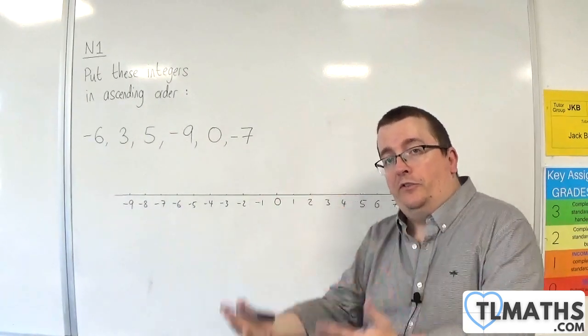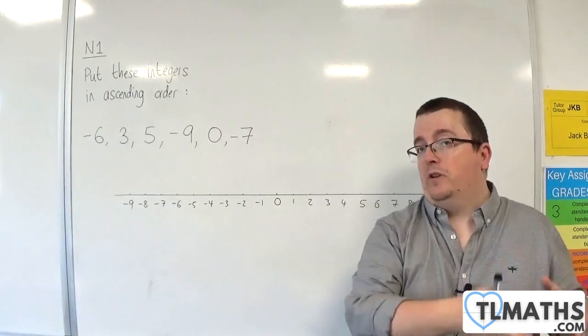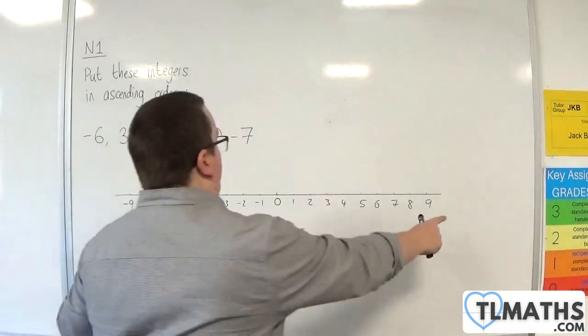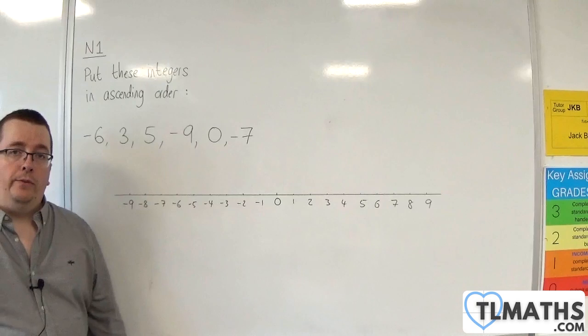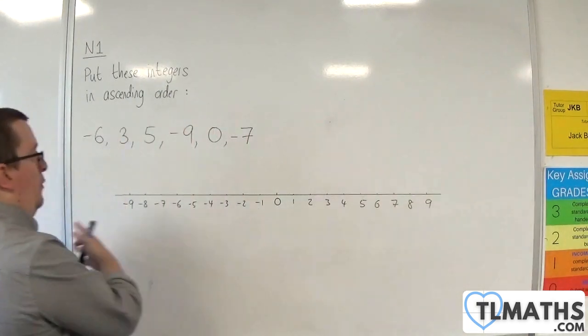But we also include 0, and we also include the negative counting numbers. So, minus 1, minus 2, minus 3, minus 4. All of these are integers. And of course, they continue forever in both directions.